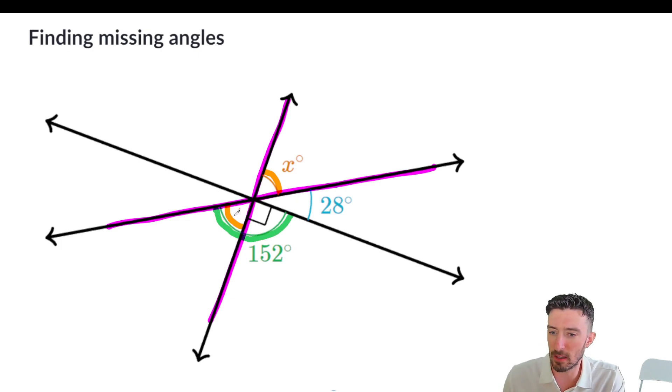So that means I can put an X right here. But what do I notice? I notice there's a right angle right next to it. What does that mean?